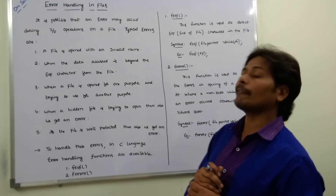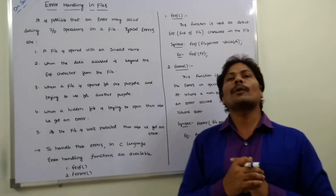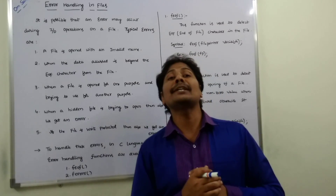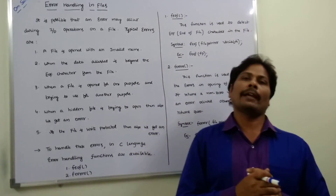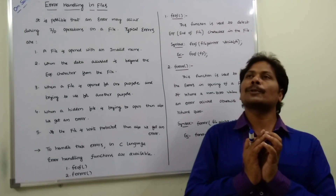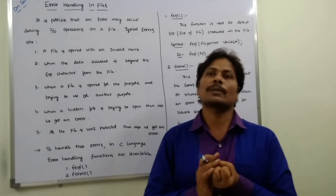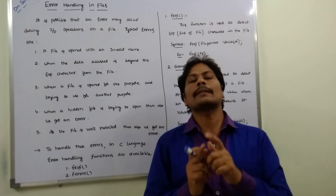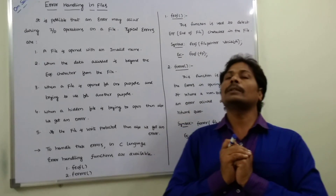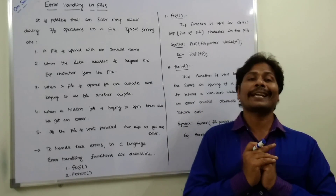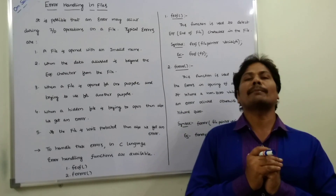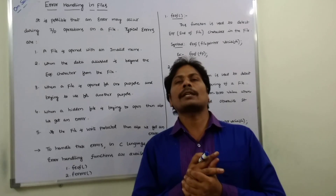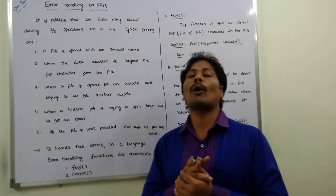The C language provides two main error handling functions. The first function is feof(). This function is used to detect the end-of-file character from a given file. The syntax for feof() is: feof(file_pointer).